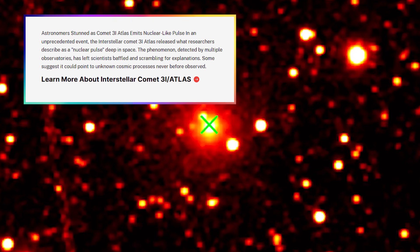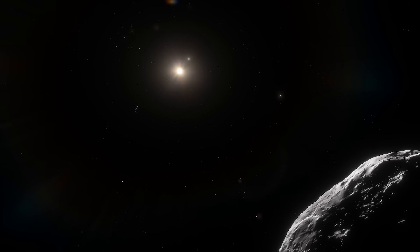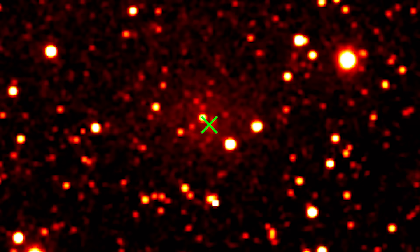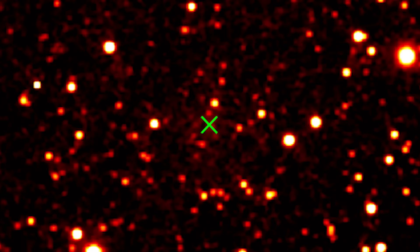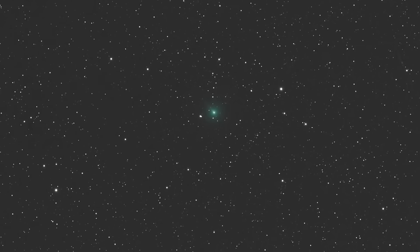Let that sink in for a moment. A comet, which is essentially a big dirty snowball, just unleashed a burst of energy so powerful that it mimics a nuclear detonation. To put it mildly, this is not normal.